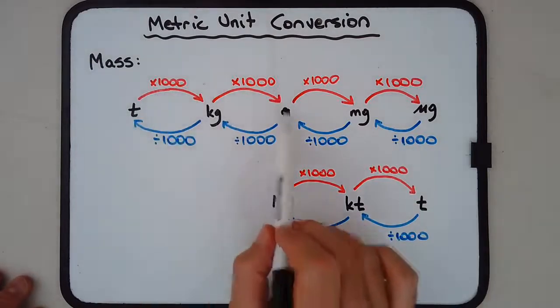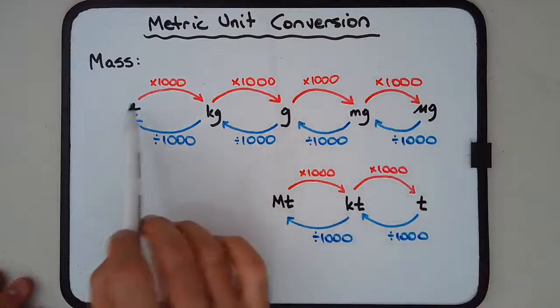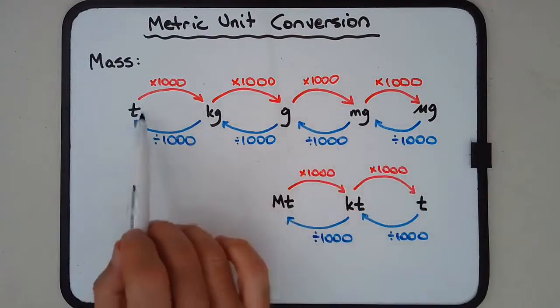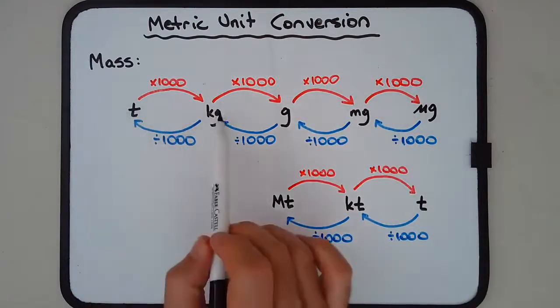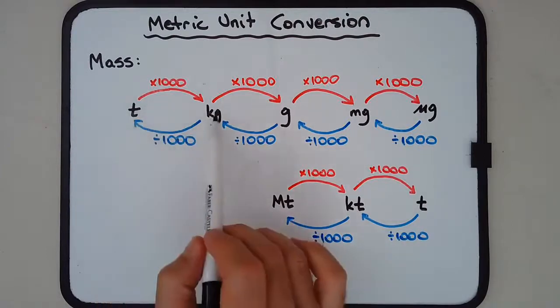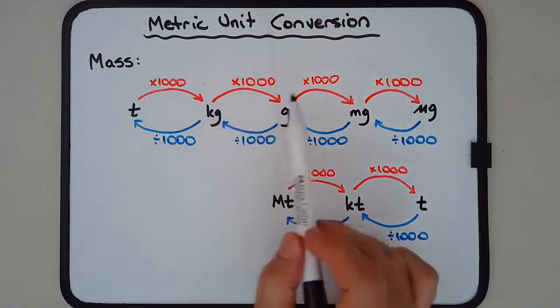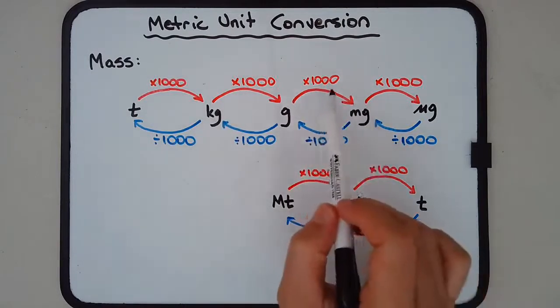Now, if you notice, the numbers in red or the arrows in red indicate what you need to do to go from a larger unit of measure to a smaller unit of measure. So converting tons to kilograms, you multiply by a thousand. Converting kilograms to grams, you multiply by a thousand. Grams to milligrams, you multiply by a thousand, so on and so on.